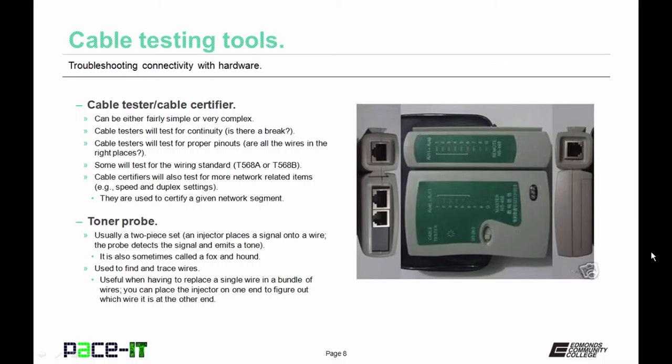Toner probes are another handy tool. They are usually a two-piece set. They have an injector which places a signal onto the wire, and a probe which detects the signal and emits a tone when it detects that signal. These are also sometimes called a fox and hound. They're used to find and trace wires, and they're useful when having to replace a single wire in a bundle of wires. You can place the injector on one end to figure out which wire it is at the other end.